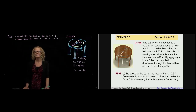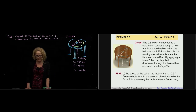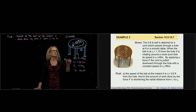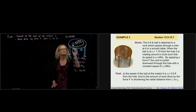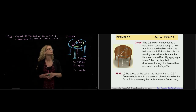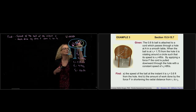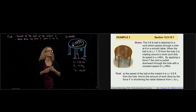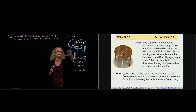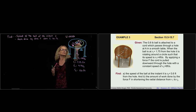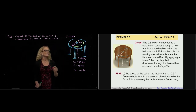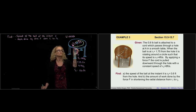This is example number three of section 15.5 to 15.7. We have a ball that is attached to a cord. The cord goes through a hole in a smooth table, and the yellow here is the trajectory or path of that ball.